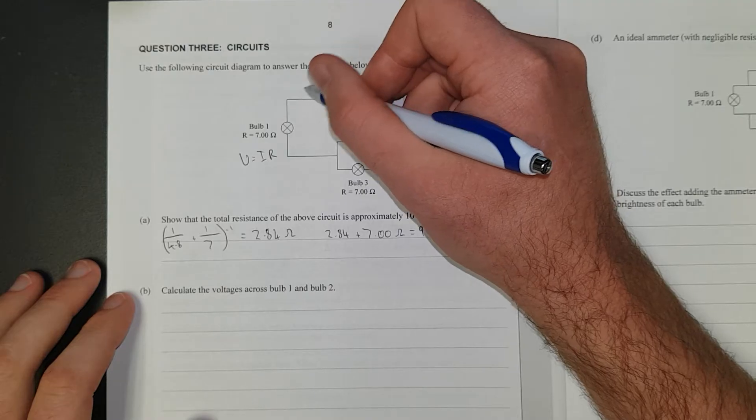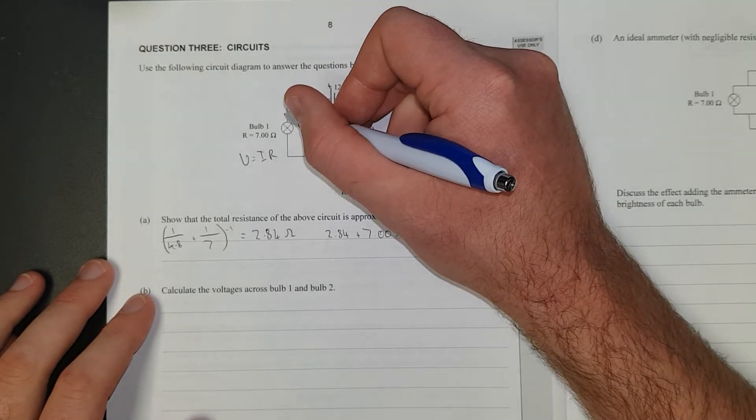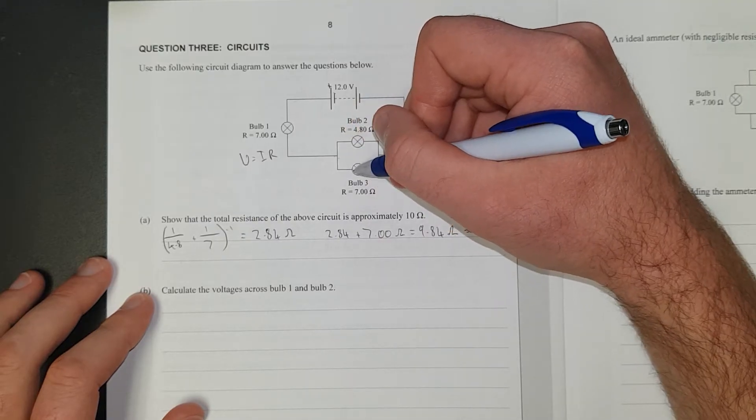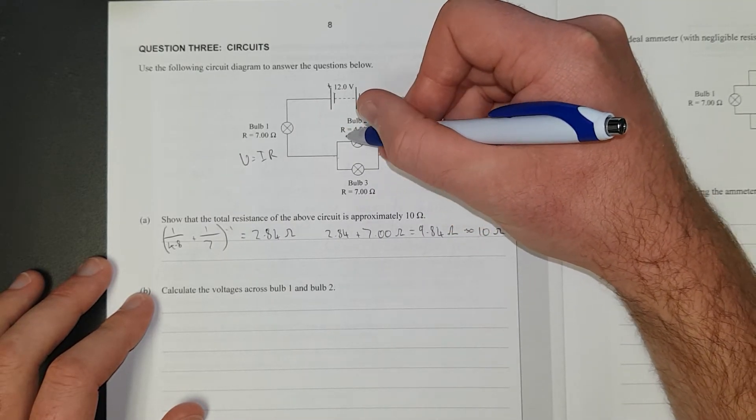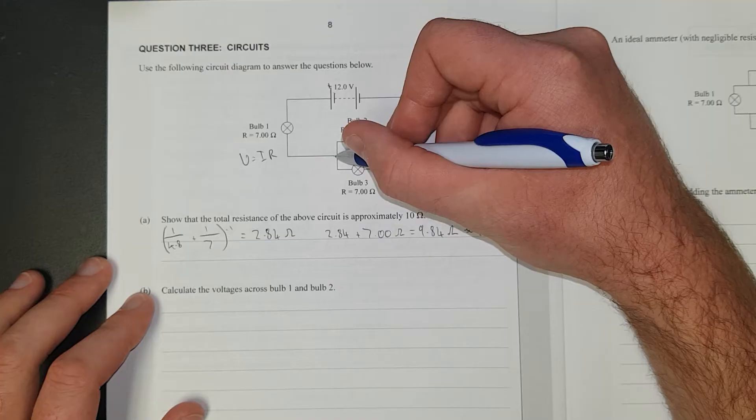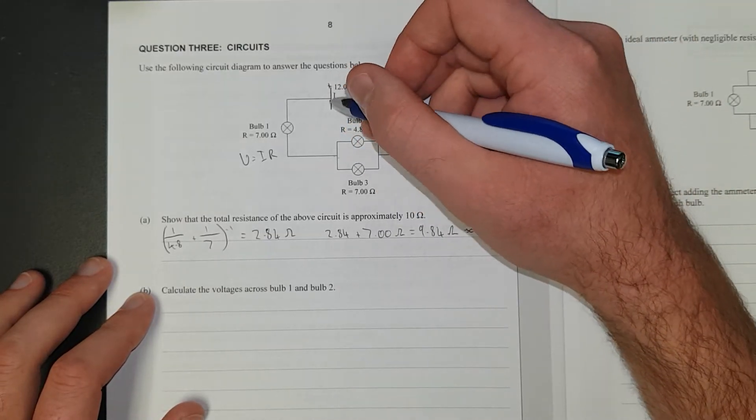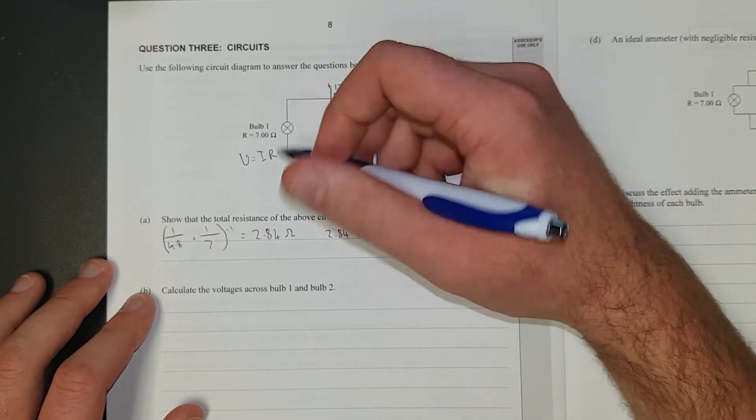It's going to go through that, all the current's going to go through this bulb, come to here. It's going to split up, more current's going to go through the least resistance bulb, and then some current's going to go through here and then along to here.